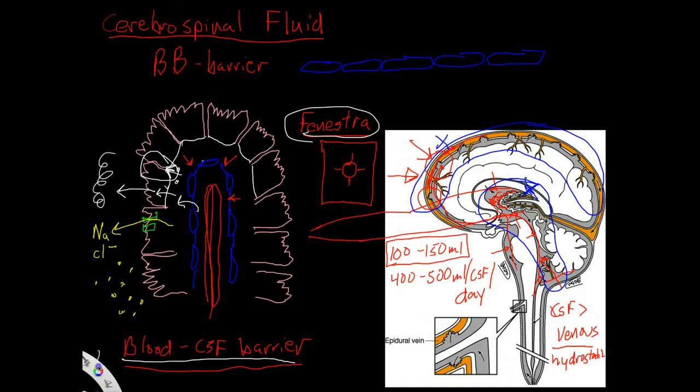Hydrocephalus can be caused by three different things. It can be caused by obstruction, which I believe is the most common. And then the other cause would be overproduction, which I think is probably the rarest, where we're producing more CSF than we can reabsorb.